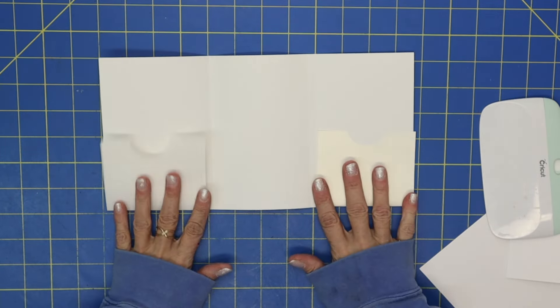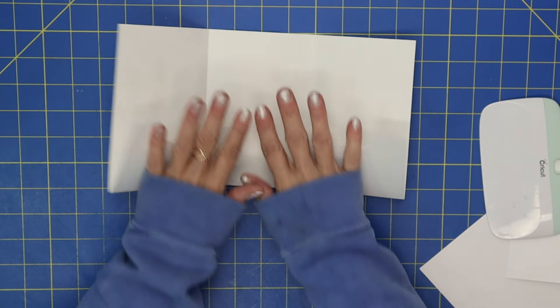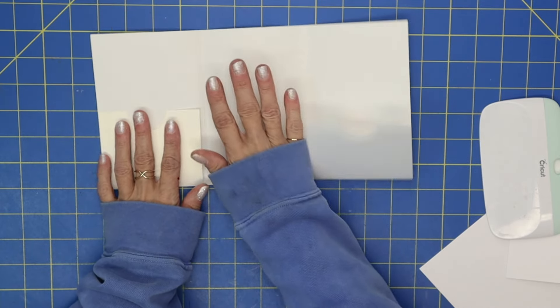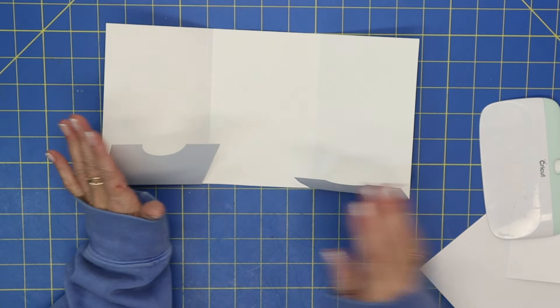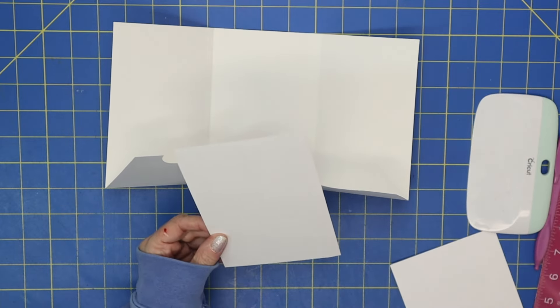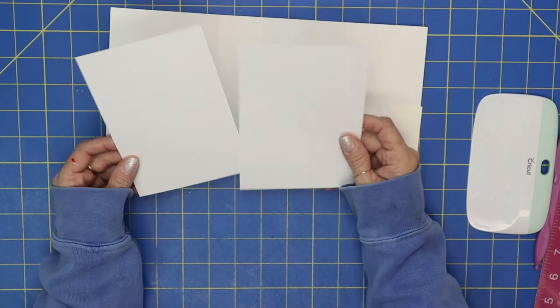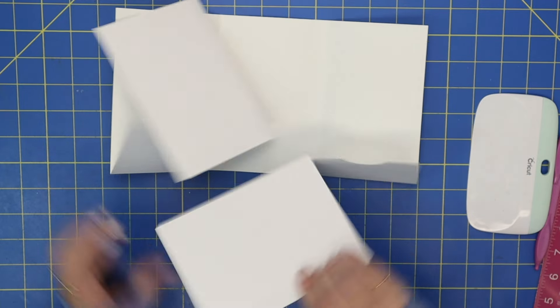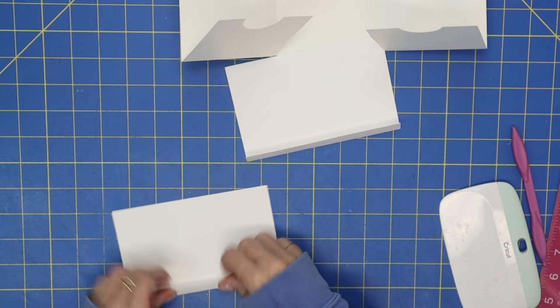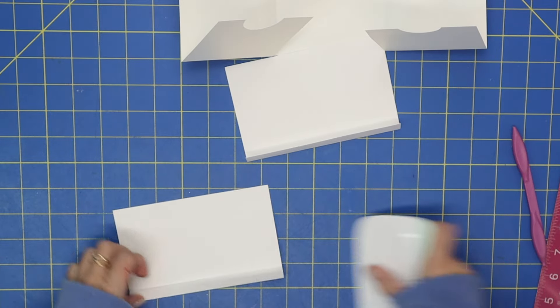Okay, so we've scored everything. Now you don't want to glue your pockets on until you have put all of your mattings down. So I'll tell you the measurements for the matting. But let's take our two pieces that were 6 by 4.25 and just score them on the score line.